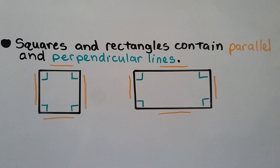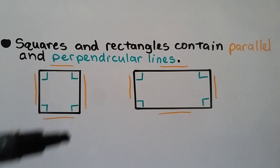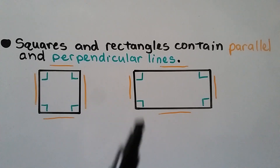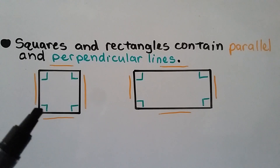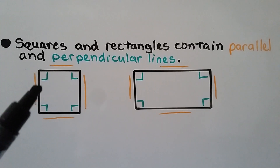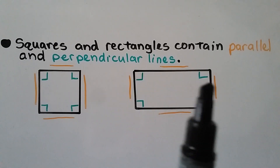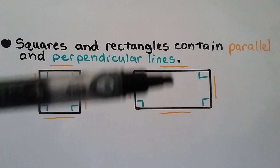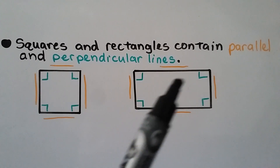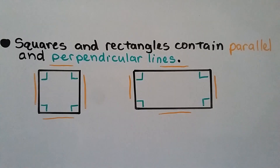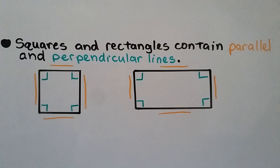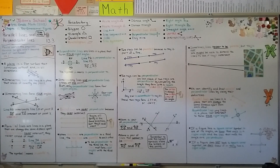Squares and rectangles contain both parallel and perpendicular lines. A square is made of four line segments — this segment is parallel to this one, and this one is parallel to this one. It has four right angles, so these segments make perpendicular lines. For a rectangle, this segment is parallel to this one, this one is parallel to this one, and it also has four right angles. We'll talk more about that in the next video on quadrilaterals — video 10.4, where we sort and classify quadrilaterals. Stay focused and have a wonderful day!